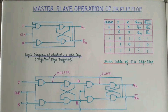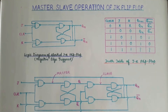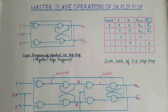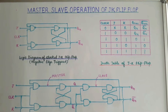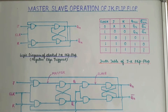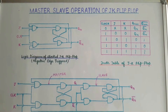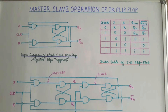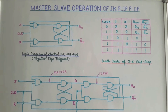In this presentation we will discuss the operation of master-slave JK flip-flop. In the previous class we discussed the operation of JK flip-flop. We use JK flip-flop because there are some disadvantages in D flip-flop and SR flip-flop. In SR flip-flop, when the input S is equal to 1 and R is equal to 1, the output is unpredictable.